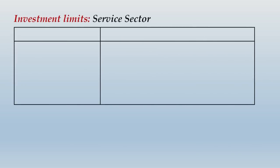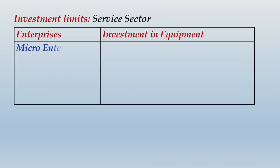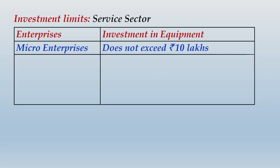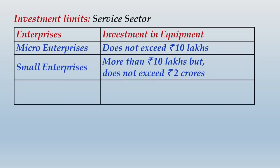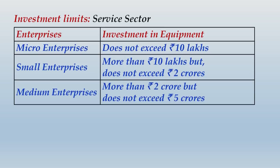For the service sector, the base was investment in equipment. Micro enterprises were those whose investment in equipment does not exceed rupees 10 lakhs. Small enterprises were those whose investment in equipment was more than 10 lakhs but a maximum of rupees 2 crores — investment in equipment should not exceed rupees 2 crores. Medium enterprises were those whose investment in equipment was more than 2 crores but not exceeding rupees 5 crores.